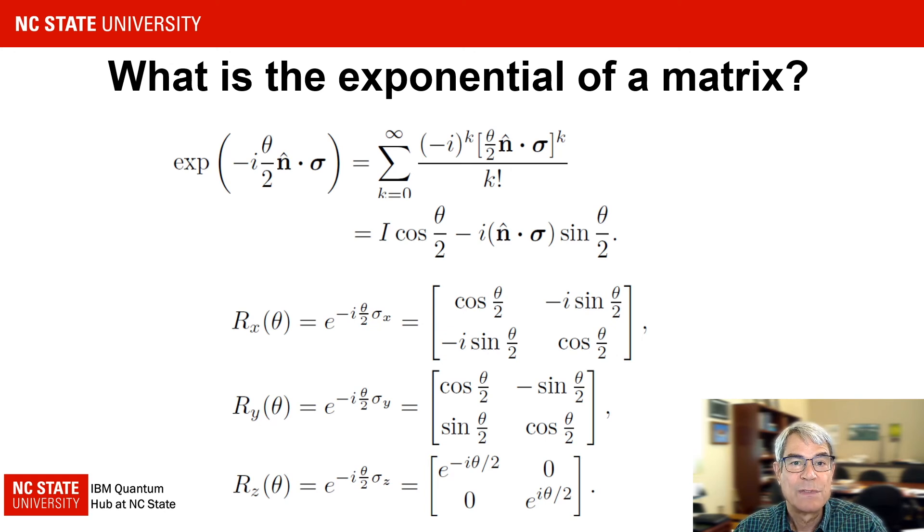A consequence of this is that a rotation of 2 pi doesn't return to the same state, but rather the negative of the starting state. However, since the measured expectation values are proportional to the magnitude squared of the state vector amplitude, this sign change has no measurable result.